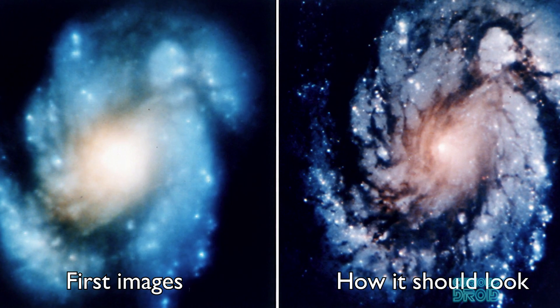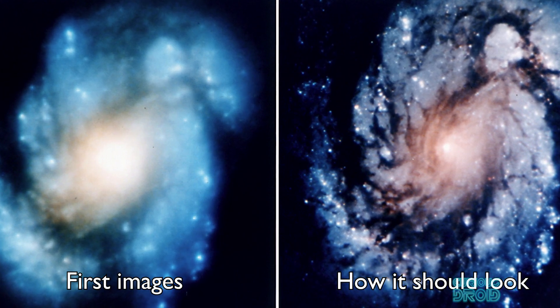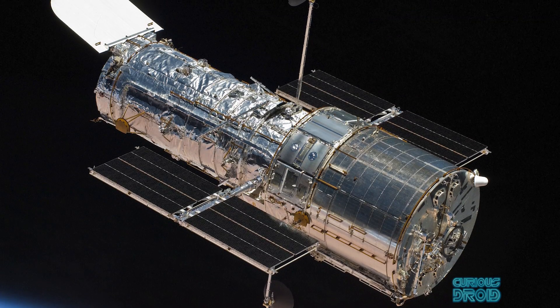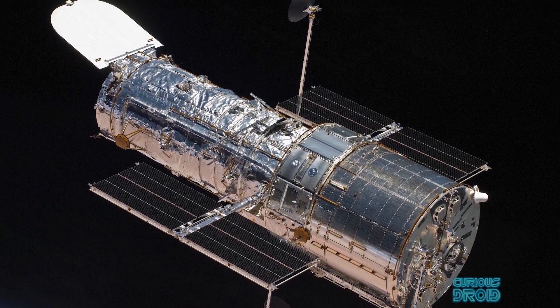The telescope with one of the most perfectly ground mirrors couldn't focus properly. Apparently the first great space observatory was short-sighted.